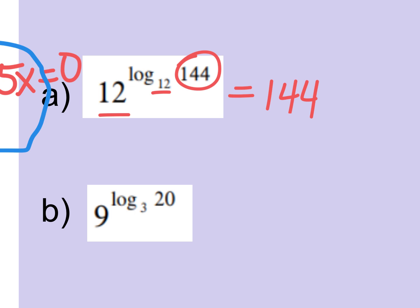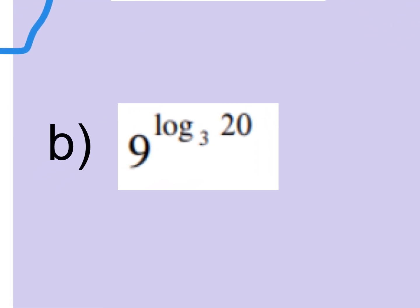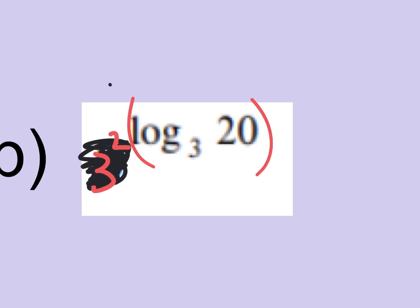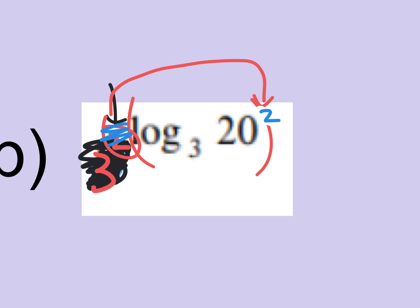Who's got an idea? Mr. T says: you can change the nine into three to the second. Yes — three squared is nine. And since three squared is in the base position, that two gets multiplied by the log, meaning the two can move to the argument: twenty squared. Now the bases are the same, and the answer is already there: twenty squared is 400.